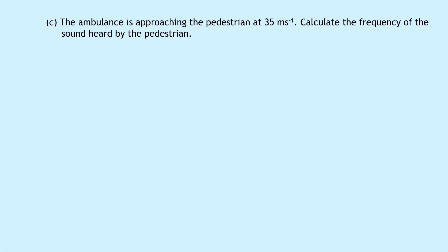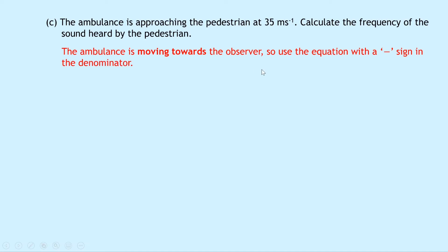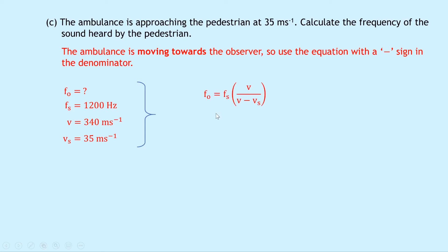Part C says that the ambulance is approaching the pedestrian at 35 metres per second. Calculate the frequency of the sound heard by the pedestrian. Since the ambulance is moving towards the observer, we use the Doppler equation with a negative sign in the denominator. FO is what we're finding, FS (source frequency) is 1200 Hz, V (speed of sound) is 340 m/s, and VS is 35 m/s. So FO equals FS times V over (V minus VS), giving us 1200 times 340 divided by (340 minus 35), which equals 1338 hertz.